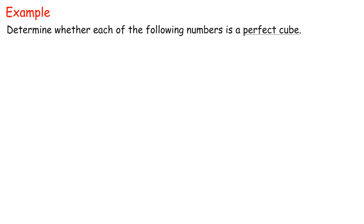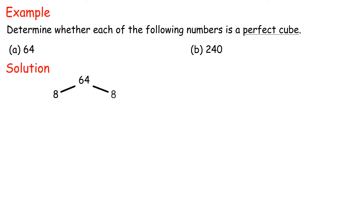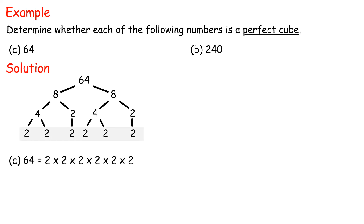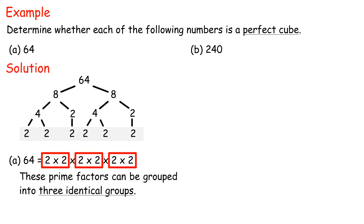Example: Determine whether each of the following numbers is a perfect cube. A: 64. B: 240. Solution A: 64 can be divided by 8 times 8. 8 can be further divided by 4 and 2, and 4 can be further divided by 2 and 2. So 64 equals 2 times 2 times 2 times 2 times 2 times 2. These prime factors can be grouped into three identical groups. Thus, 64 is a perfect cube.